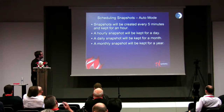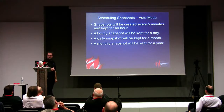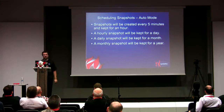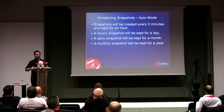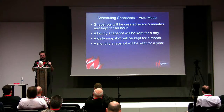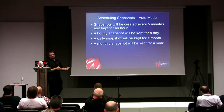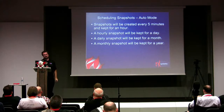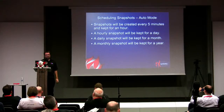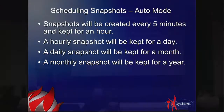Auto mode is something new we added about six months ago. It does a tiered schedule: snapshots every five minutes kept for an hour, hourly snapshots kept for 24 hours, daily snapshots kept for a month, and monthly snapshots kept for a year. It's pretty convenient — on my laptop, if my wife deleted a document three weeks ago, I can go find it in the old snapshot from a couple months back. No problem.